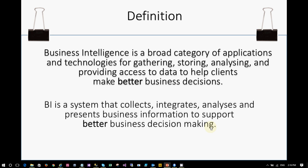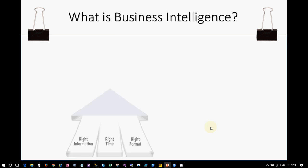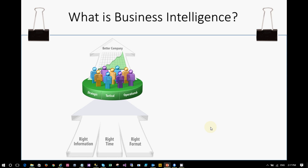Business intelligence is all about collecting the data, storing the data, analyzing the data, and arranging the data in a format where a business can take a better decision. It's all about getting the right information in the right time in the right format for making better decisions. Decisions can be at a strategic level, a tactical level, and an operational level, which will take your company to a better place.